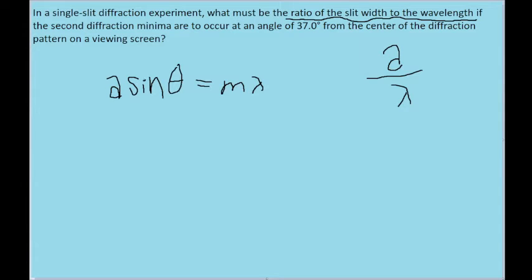Since both of these variables are part of this equation, we can solve for this value by solving for a over lambda in the equation. First I'm going to divide both sides of the equation by lambda, and now I'm going to divide both sides of the equation by sine of theta to get the a over lambda term on its own.